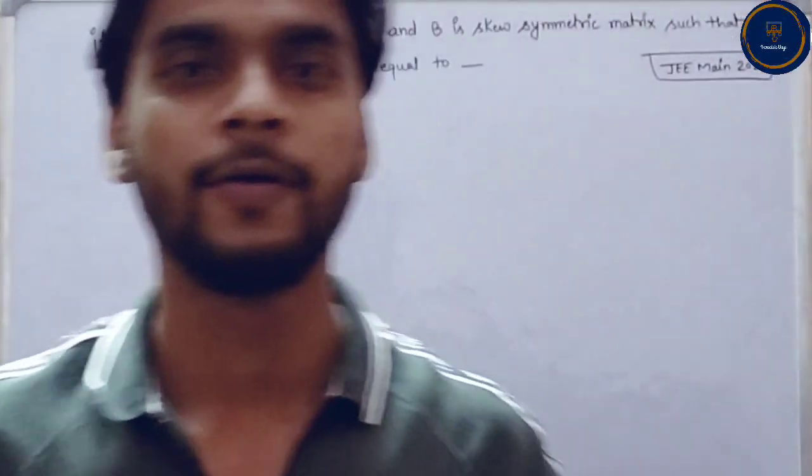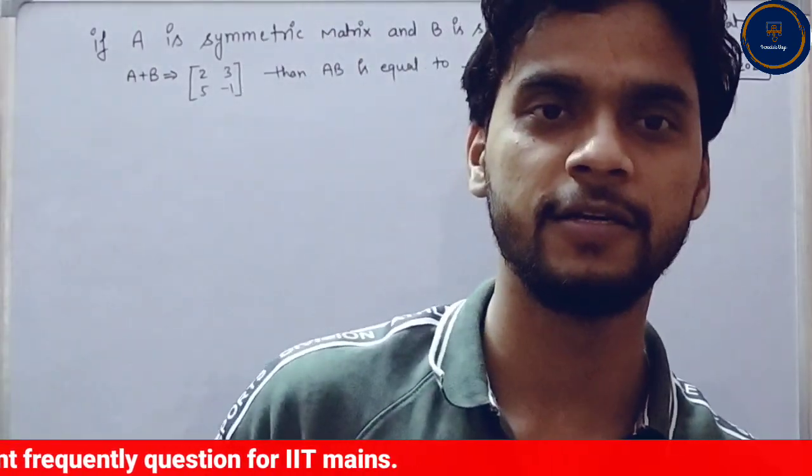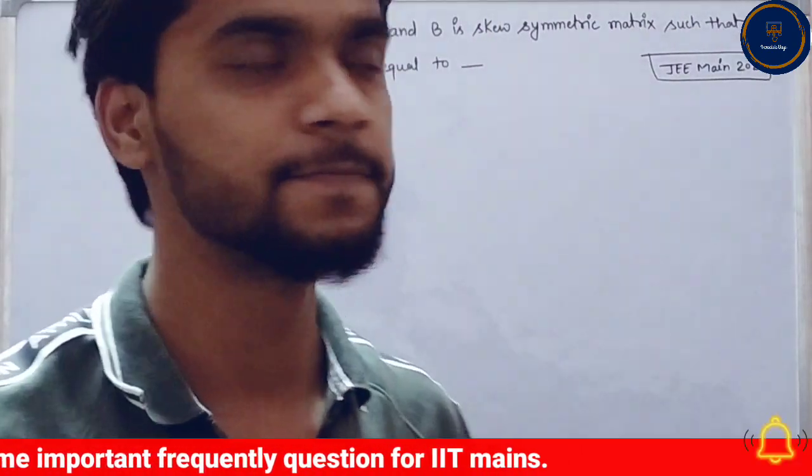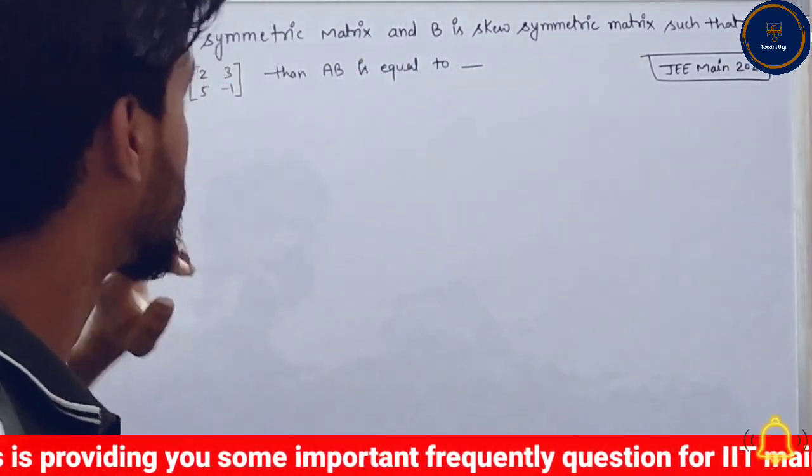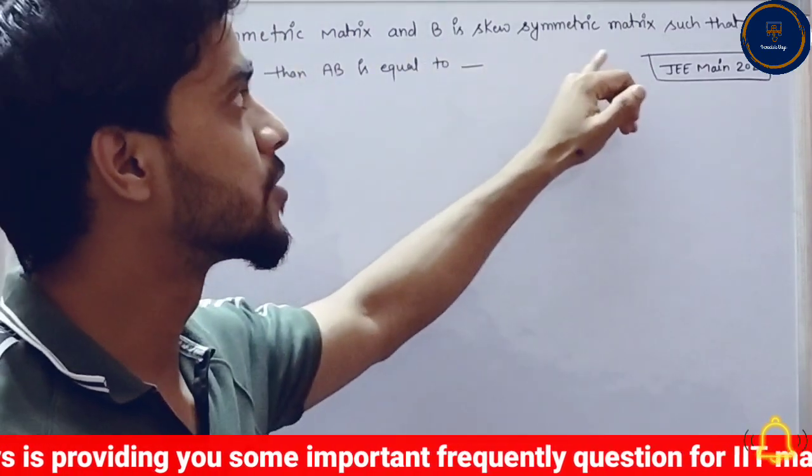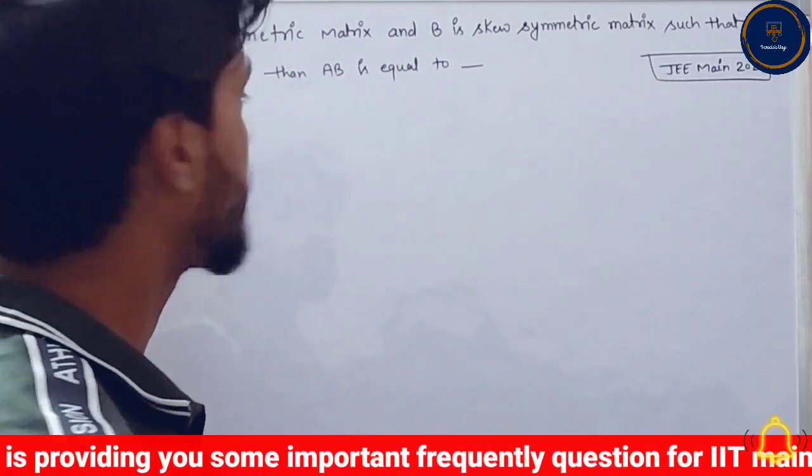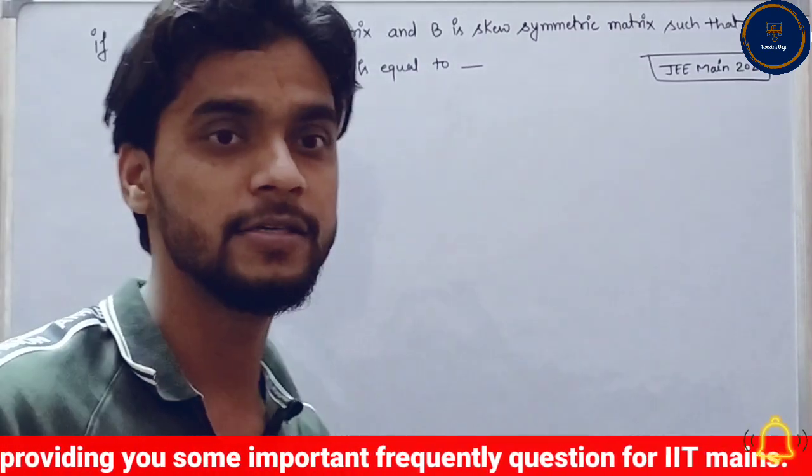Hello guys, in this video I am going to ask you a question from 2020. As you know, I have a question here. A is a symmetric matrix and B is a skew symmetric matrix, such that A plus B is given, then A multiplied by B is equal to...